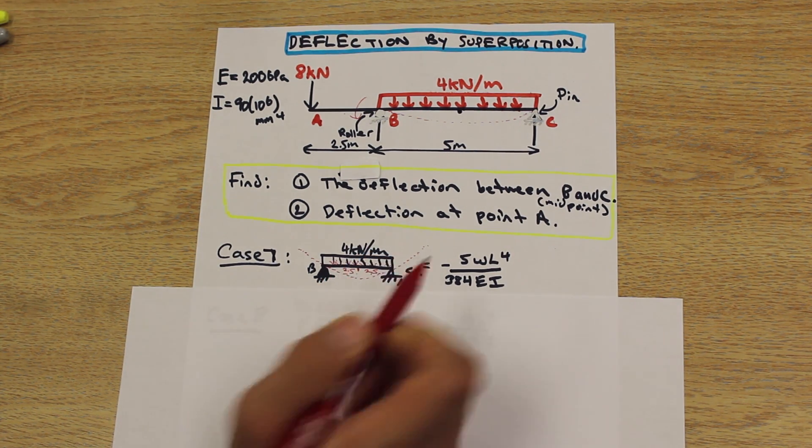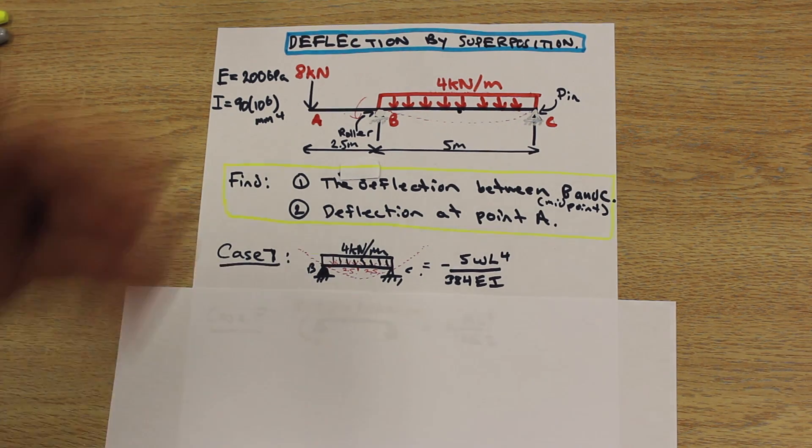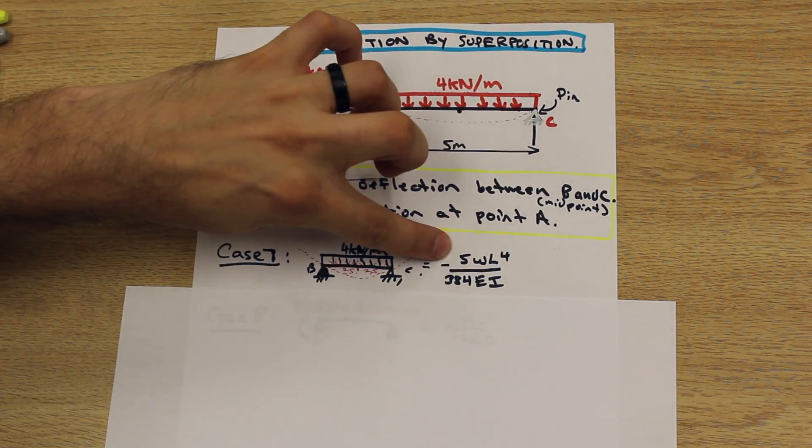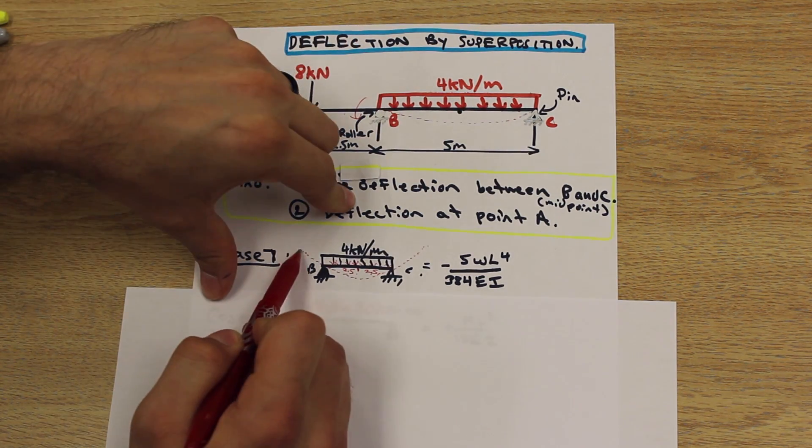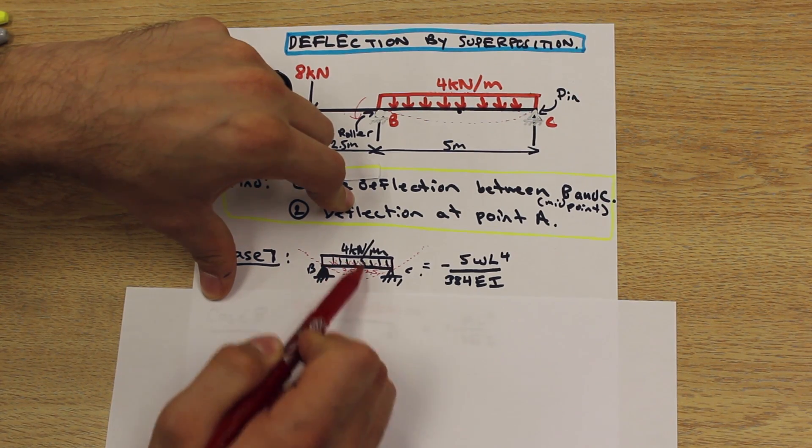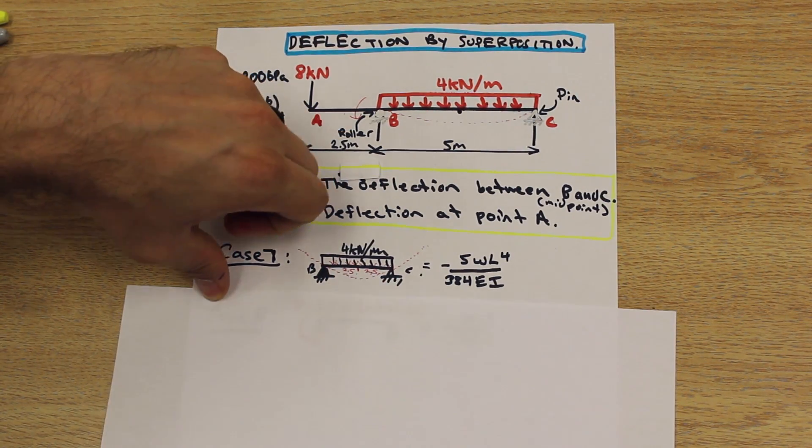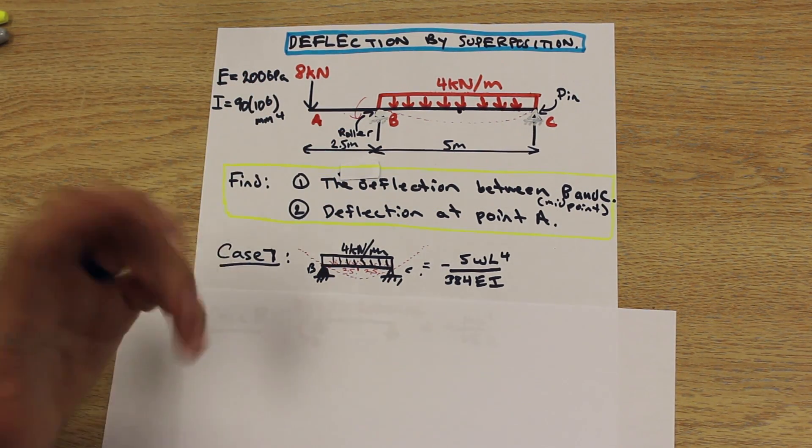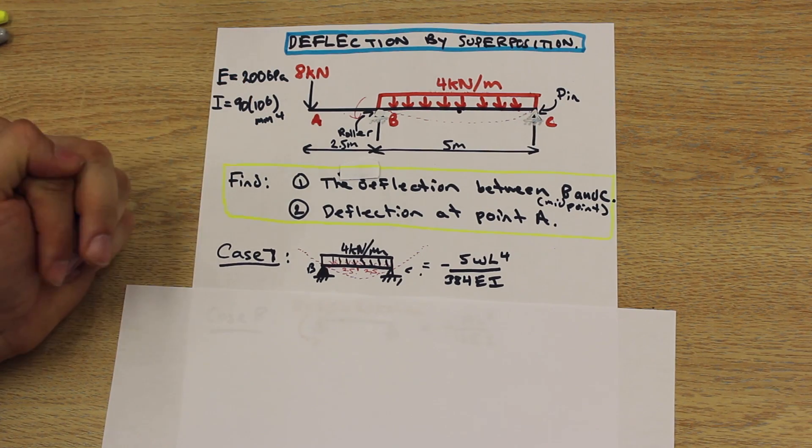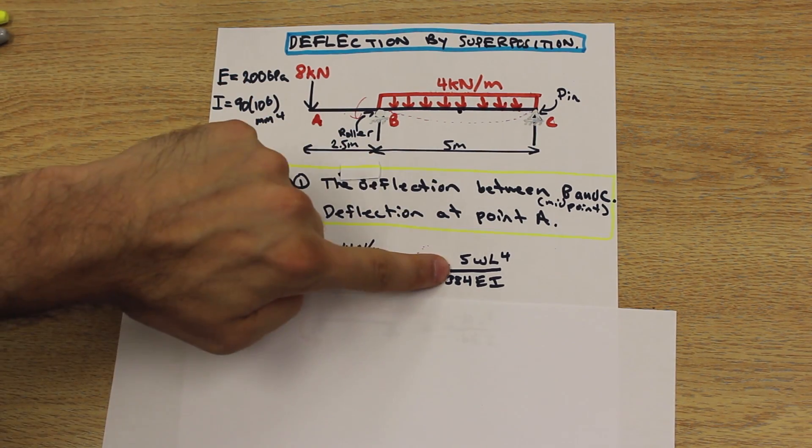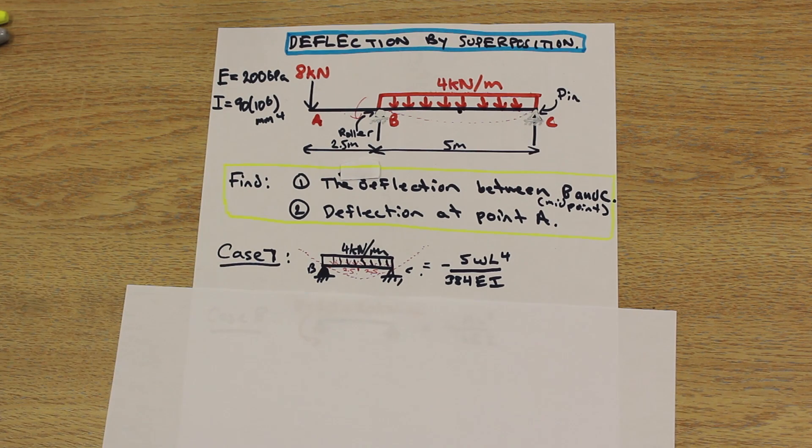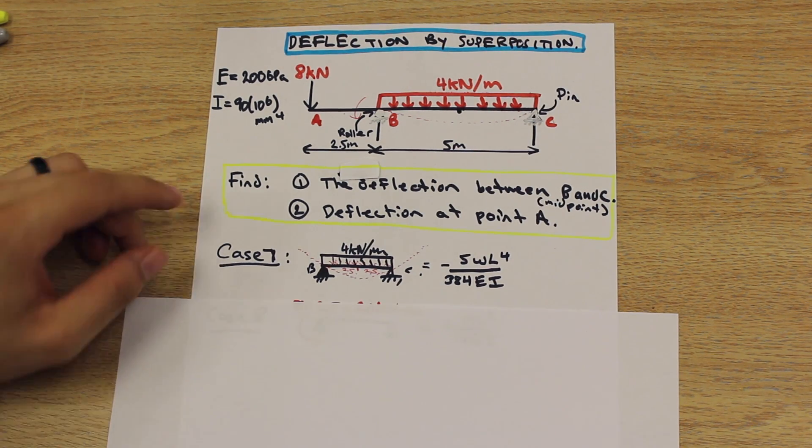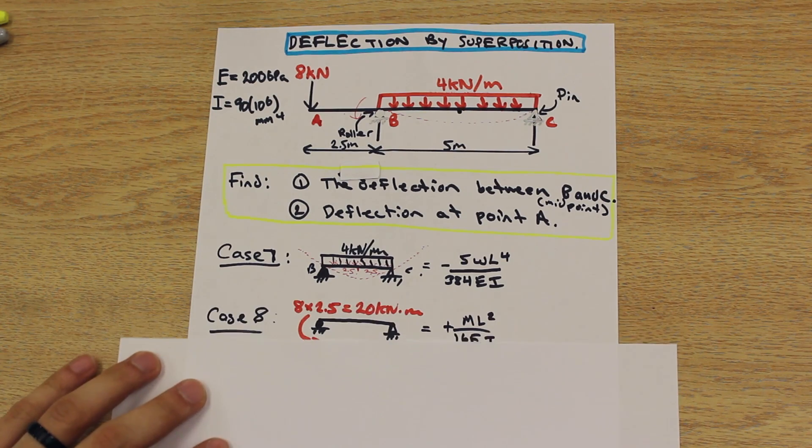So what that means is the length of this beam from B to C, the section of the beam, L over 2 would be 2.5 meters. And that's exactly where we want to solve for, 2.5 and 2.5 meters. That's our midpoint, and that's what the question is asking for. So what we're going to do is we're going to take that equation, we're going to write it here to the right. And it's a negative sign because I've drawn the elastic curve here. And as we can see, the beam is deflecting downwards. So downwards is going to be considered a negative deflection.